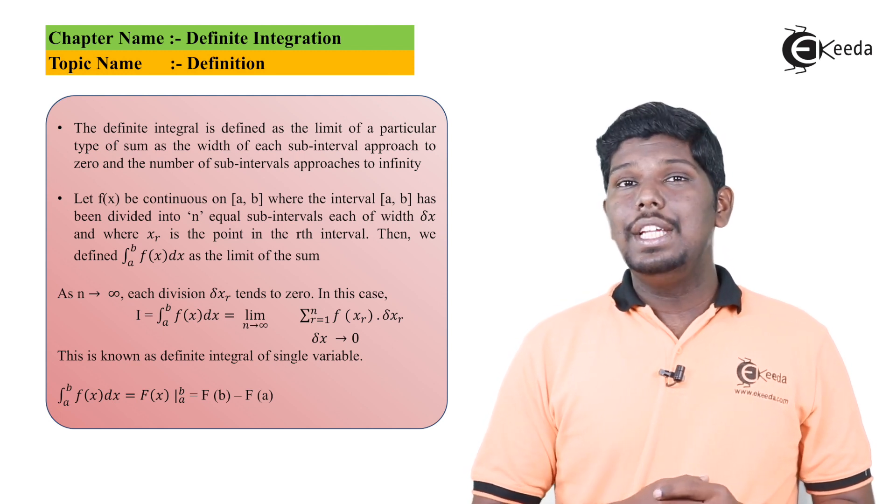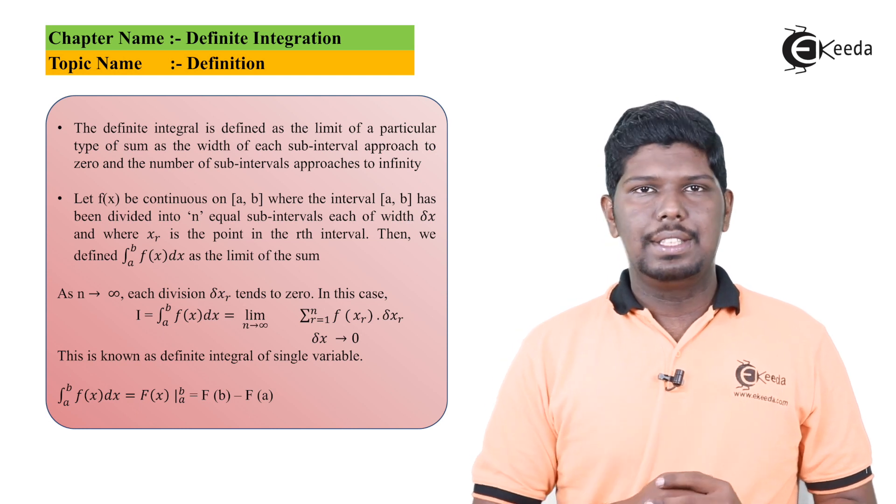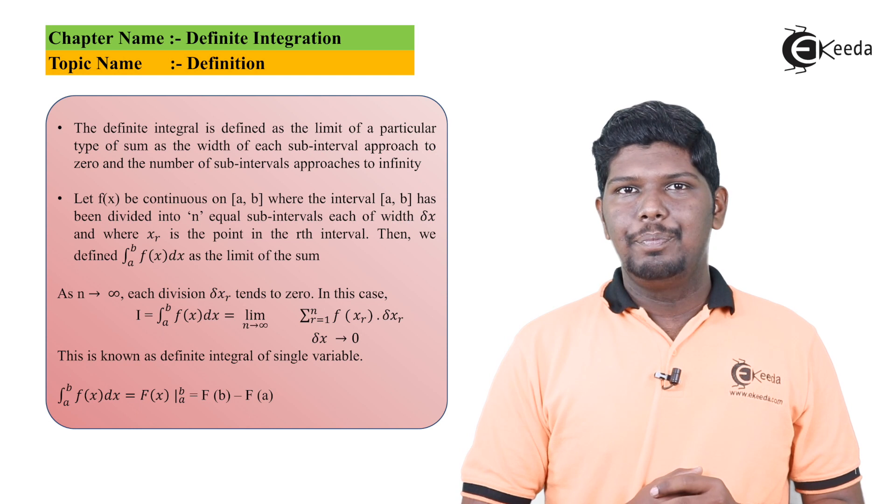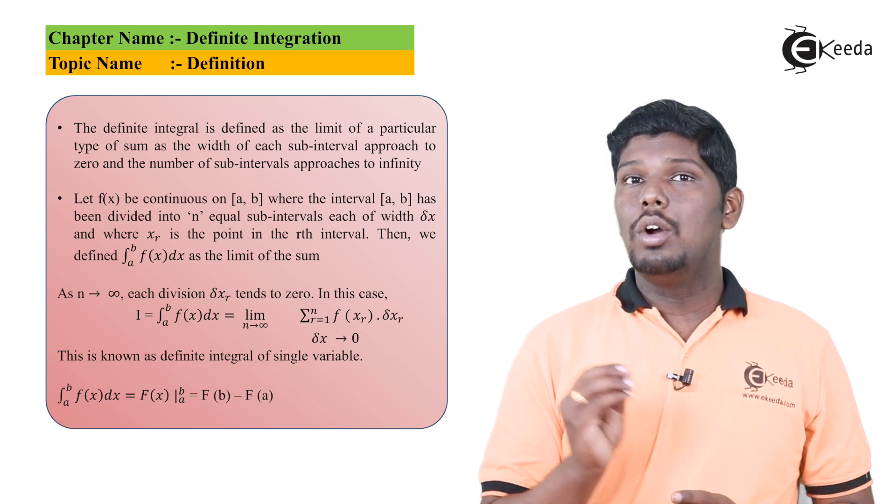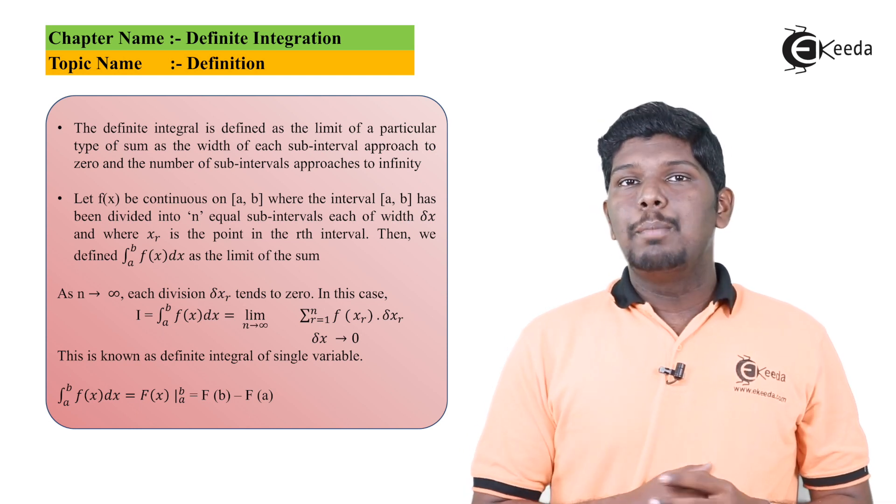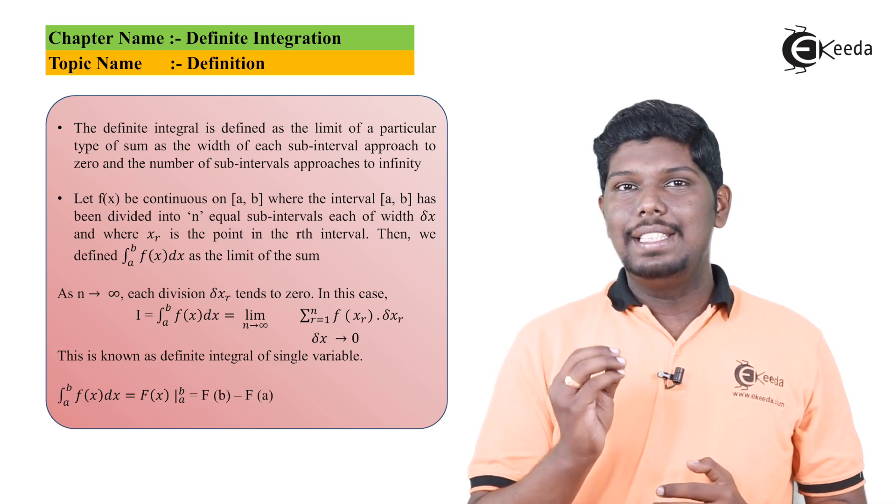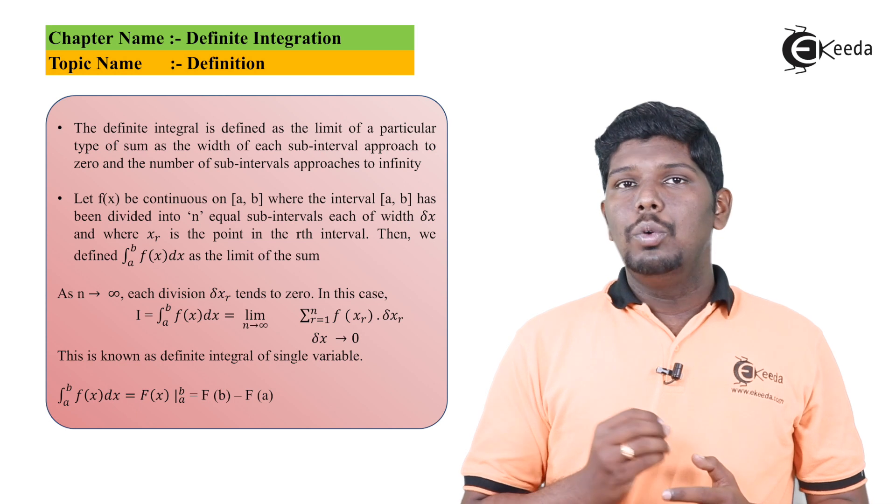Equal parts and width of each section will have del x. So whenever we say as number of parts are tending to infinite, then in that case the value of del x will tend to zero. As number of intervals tends to infinite, here the width of each interval that is del x will tend to zero.